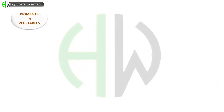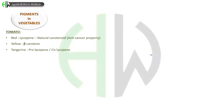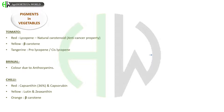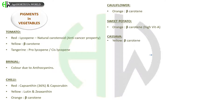Let us see the pigments present in vegetable crops. In tomato, red color is due to lycopene, which is a natural carotenoid and has anti-cancer property. Yellow color is due to beta-carotene. Tangerine color is due to pro-lycopene or cis-lycopene. In brinjal, color is due to the presence of anthocyanins. In chili, red color is due to capsanthin (36%) and capsorubin. Yellow color is due to lutein and zeaxanthin. Orange color is due to beta-carotene.